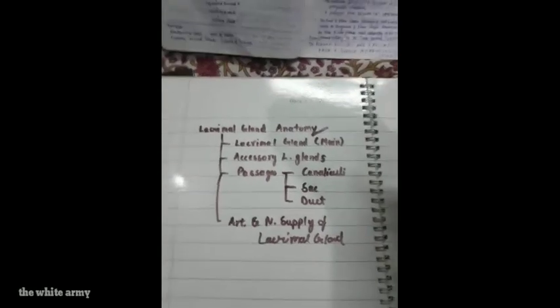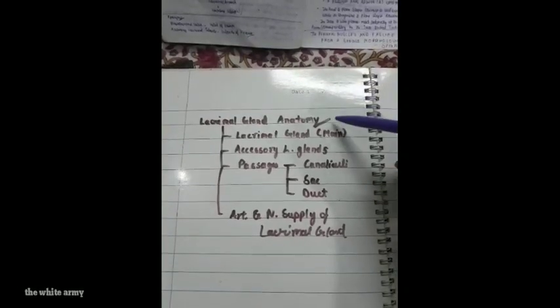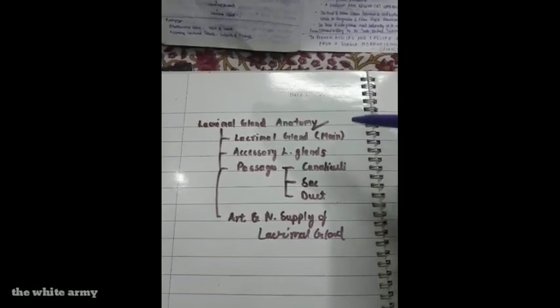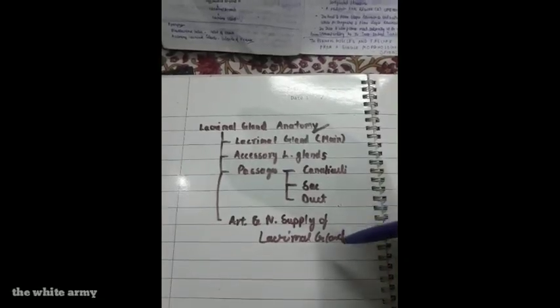Hello everyone. Today from the subject of ophthalmology, we will be discussing the lacrimal gland anatomy. The lacrimal gland anatomy can be studied under four main headings: the main lacrimal gland, the accessory lacrimal glands, the passages — lacrimal canaliculi, lacrimal sac, and nasolacrimal duct — and the arterial and nerve supply of the lacrimal gland.